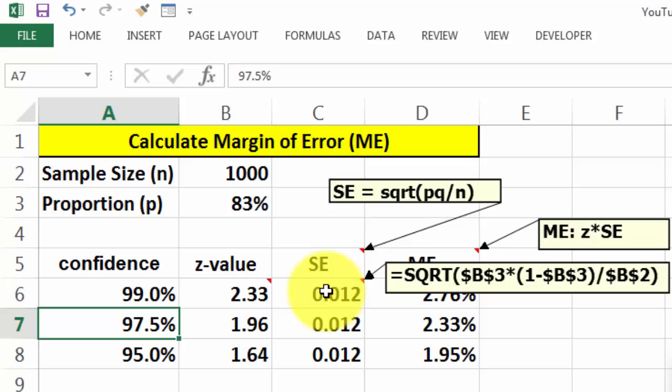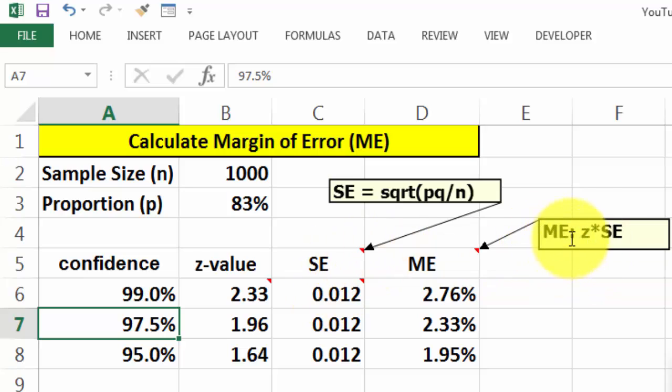So that is, in this case, the square root of the calculation. Then we calculate the margin of error. That is the z-value times the standard error. So in this case, that would be 2.76%.